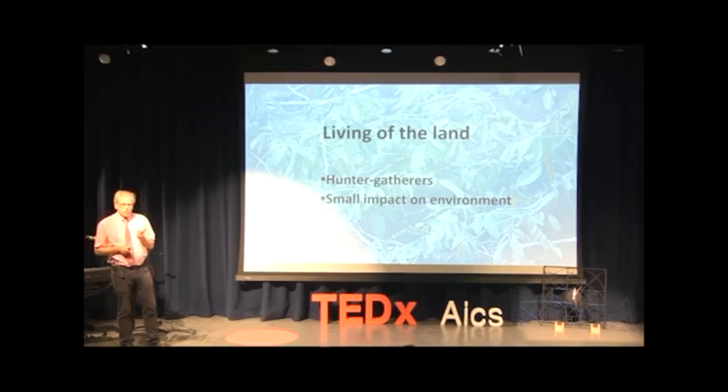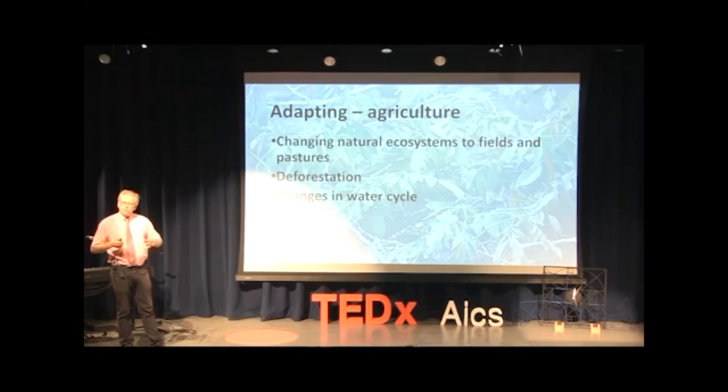All of this changed a lot when we developed, invented agriculture. Because then instead of keeping the land as it was, we started to change it so it could supply us with what we needed. So we changed natural ecosystems to fields and pastures. That led to deforestation, changes in the water cycle.